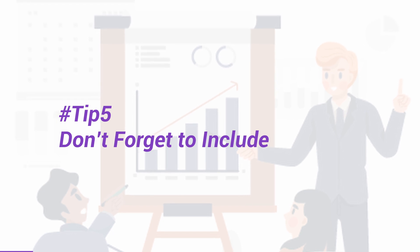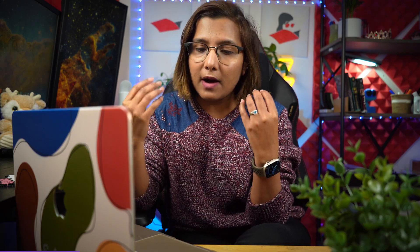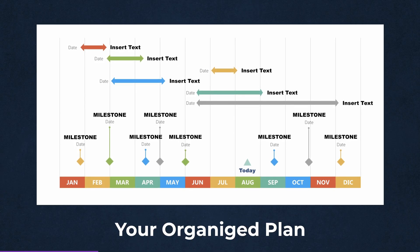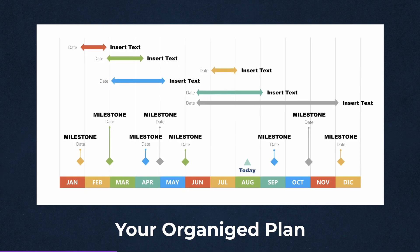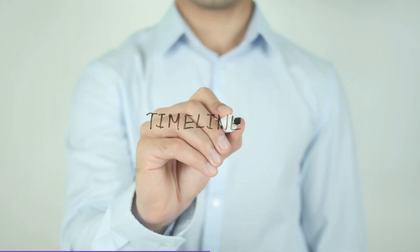Tip number five: don't forget to include a timeline. This is your chance to demonstrate to the admissions committee that you have a plan for conducting your proposed research in an organized manner. Not everybody will include that, so this is your chance to stand out. Show the admissions committee your proposed research plan in a timeline with specific goals and specific milestones — and this will make you stand out.